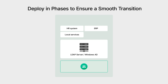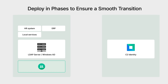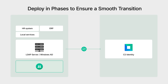Now that you've reviewed your setup, it's time to start rolling out C2 Identity in phases to ensure a smooth implementation. You can start by syncing your existing IAM or Identity Provider, IDP, data to C2 Identity. For example, your internal systems might currently rely on Synology LDAP servers or Windows Active Directory for management and authentication. With C2 Identity, you can sync these systems to integrate both SaaS applications and device management.